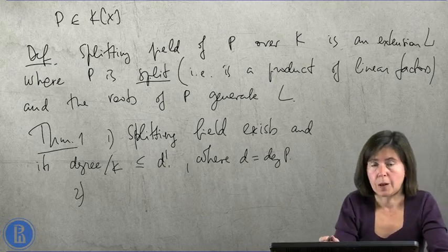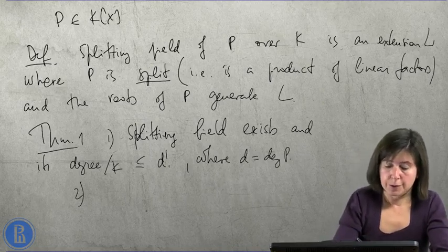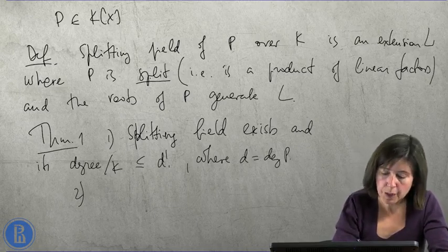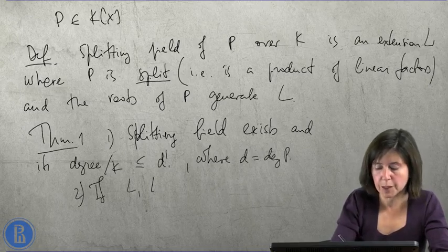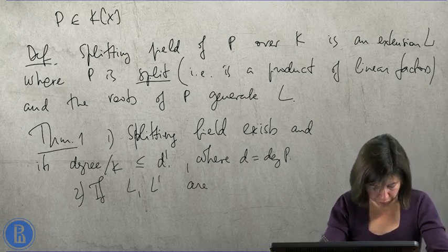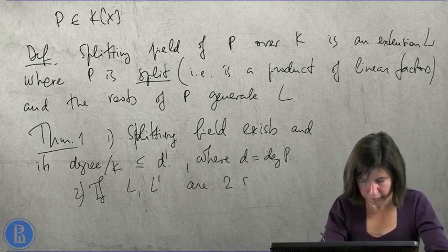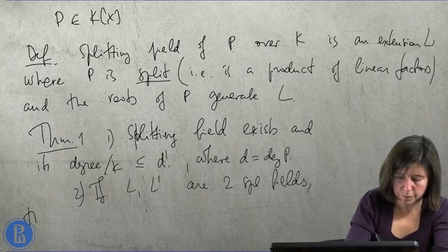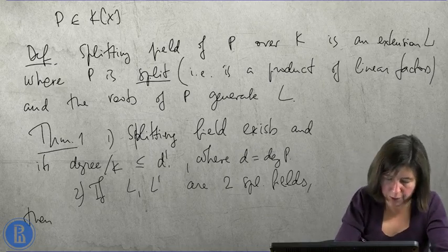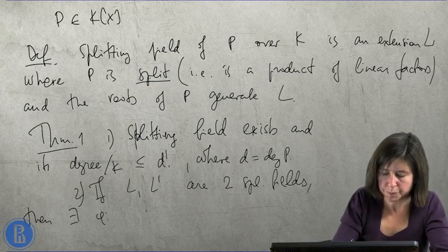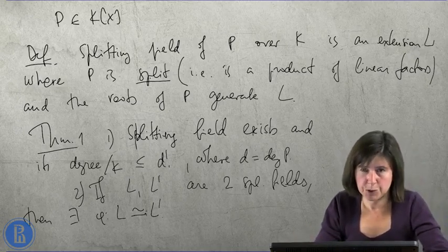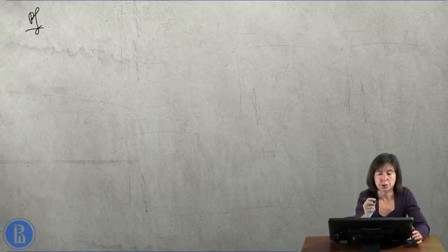where d is the degree of p. Secondly, it is unique up to isomorphism. If L, L' are two splitting fields, then they are isomorphic as k-algebras, but such an isomorphism will not necessarily be unique. We shall prove this theorem by